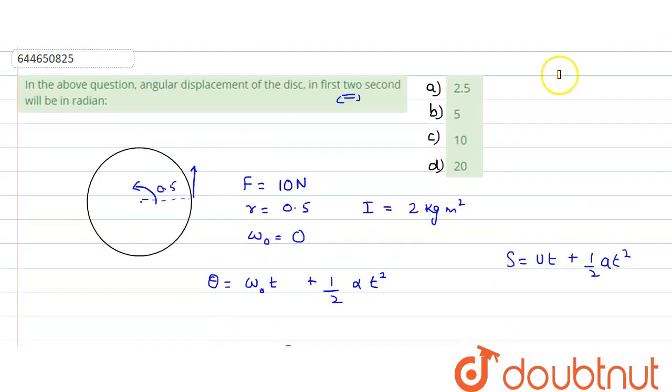Which is the correct option? Correct option would be 5 radians, B is the correct option. Hope you understood the solution, thank you.